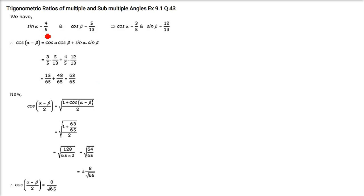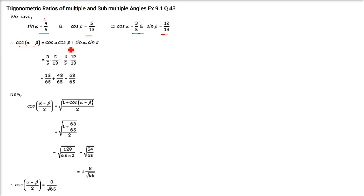Next: sin α = 4/5, cos β = 5/13. Prove cos((α−β)/2) = 8/√65. First find cos α from sin α = 4/5 and sin β from cos β = 5/13 using right triangles. Then cos(α−β) = cos α cos β + sin α sin β. Substituting all values gives 63/65. Using cos((α−β)/2) = √[(1 + cos(α−β))/2] gives ±8/√65.